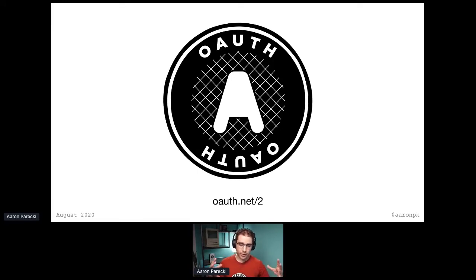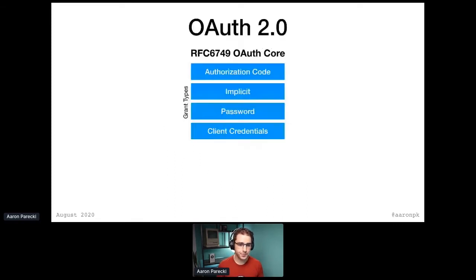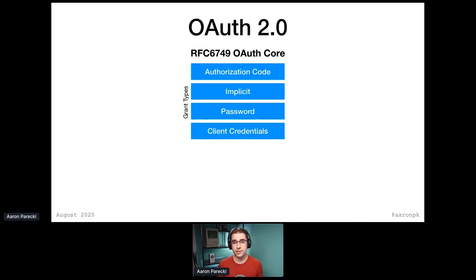I want to set the stage for what OAuth 2 is, and then talk about how that leads into where the group is heading with the spec. OAuth 2 is a collection of documents, and the core document is RFC 6749 — that's the OAuth authorization framework — and it essentially describes a few different grant types. These grant types are different ways for applications to get access tokens and get access to somebody's account.